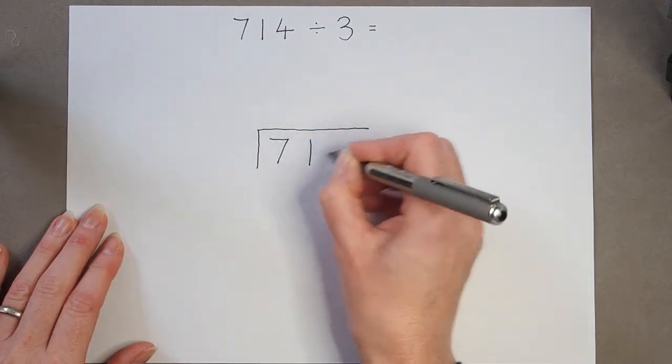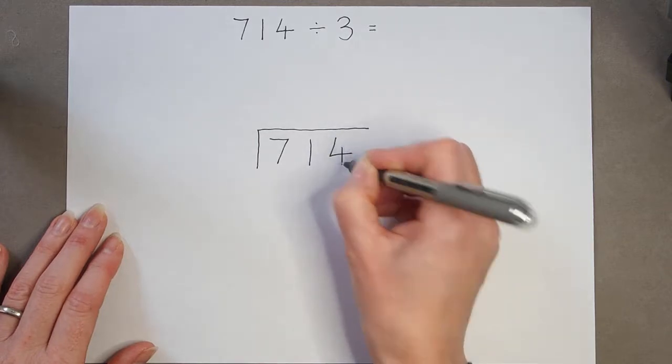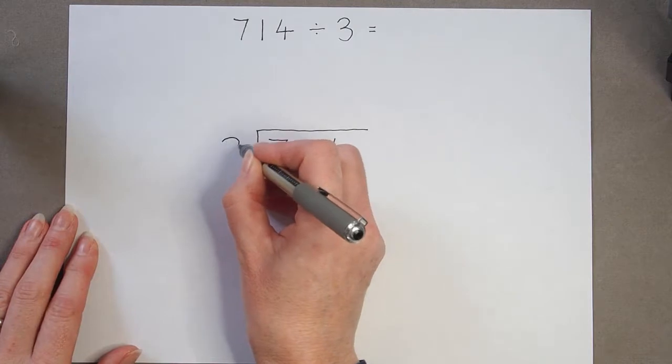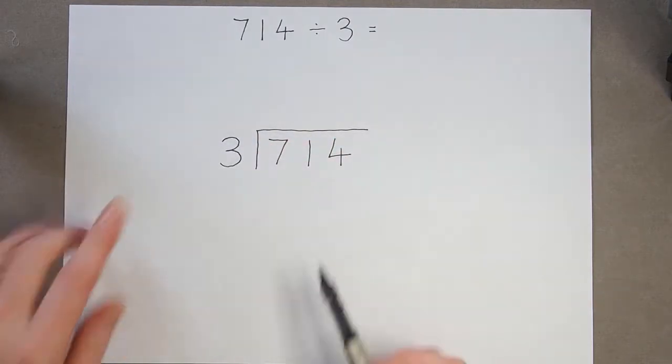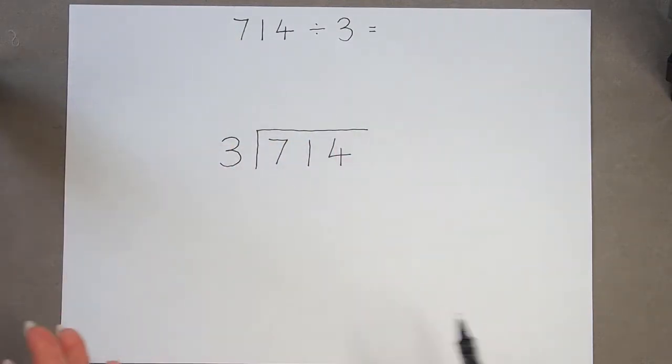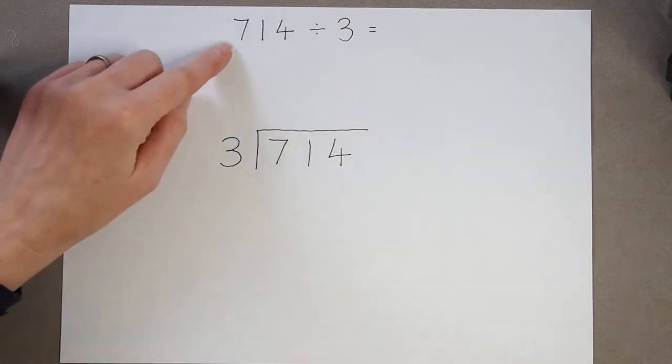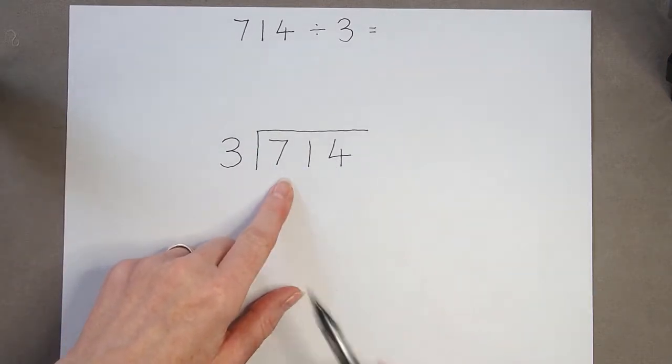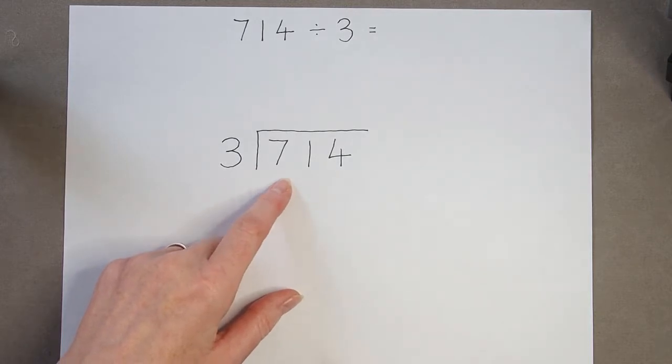714, and I'm dividing it by 3. So again we can see it looks the opposite way round. It's important to remember that first number is always the one going inside the box, that's the one we're starting with and dividing.